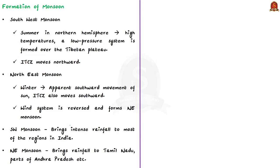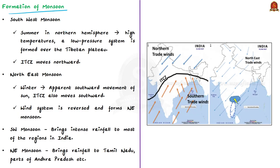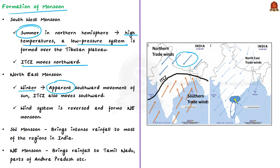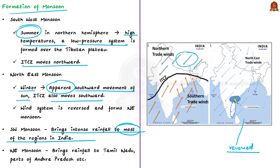During summer in the northern hemisphere, due to high temperatures, a low pressure system is formed over the Tibetan plateau. The intertropical convergence zone moves northward due to the apparent movement of the sun, forming the southwest monsoons. During winter, with the apparent southward movement of the sun, the ITCZ also moves southward, reversing the wind system and leading to the formation of the northeast monsoon. Southwest monsoons bring intense rainfall to most regions of India, while northeast monsoons bring rainfall mainly to the southeastern coast — Tamil Nadu and parts of Andhra Pradesh.